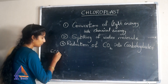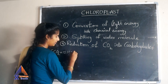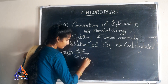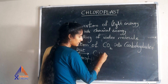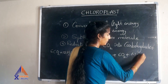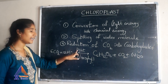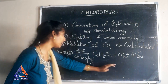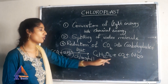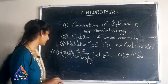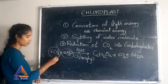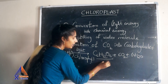The photosynthesis equation: 6CO2 plus 12H2O, in the presence of light and chlorophyll, gives glucose plus oxygen plus water. Here the light energy is converting into chemical energy. The water molecule undergoes splitting to form glucose, oxygen, and water. Carbon dioxide undergoes reduction to form glucose.